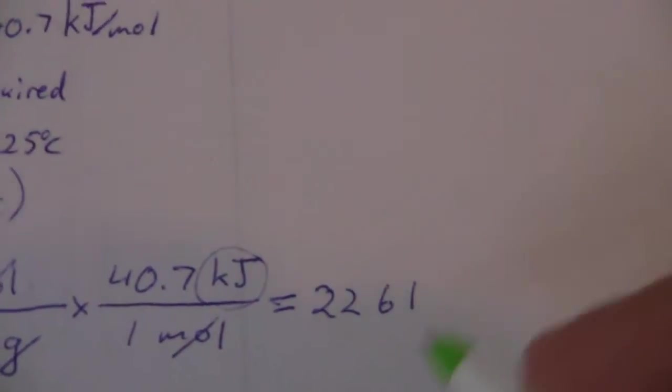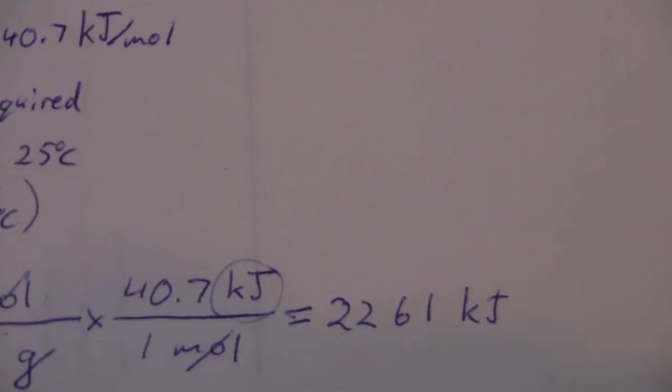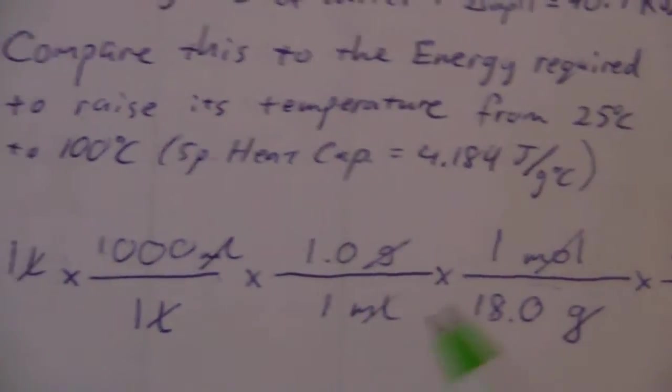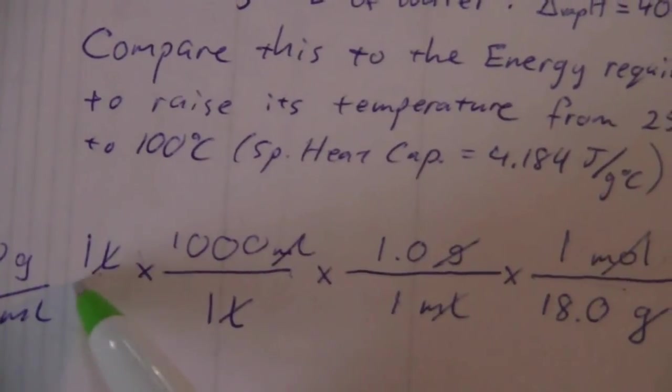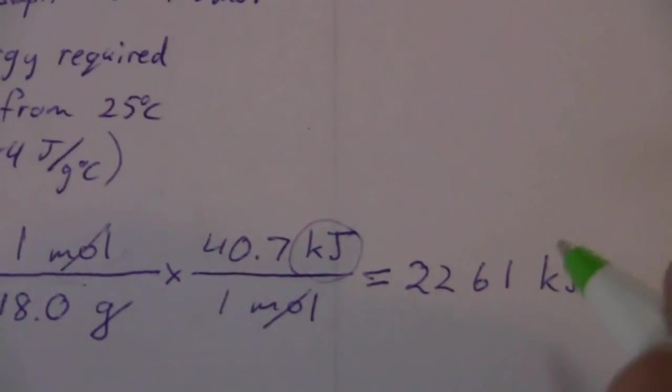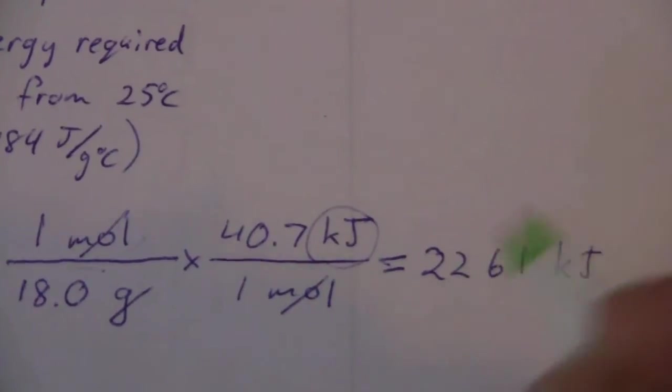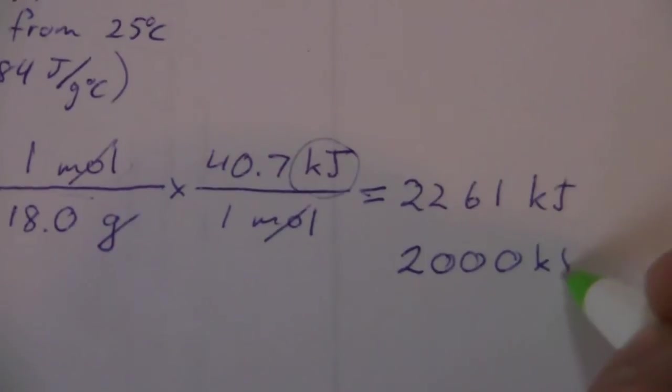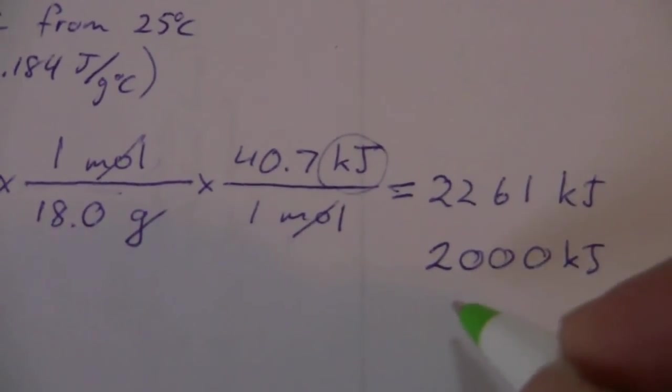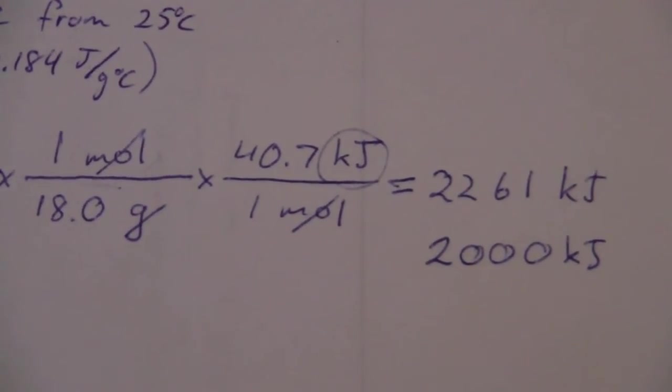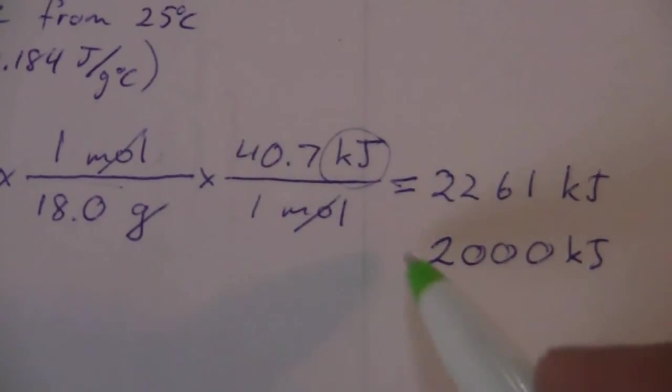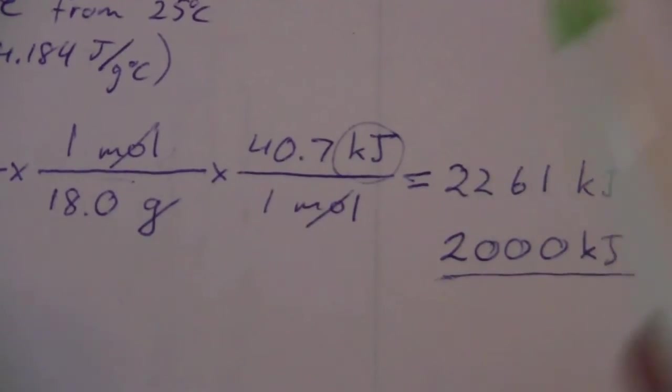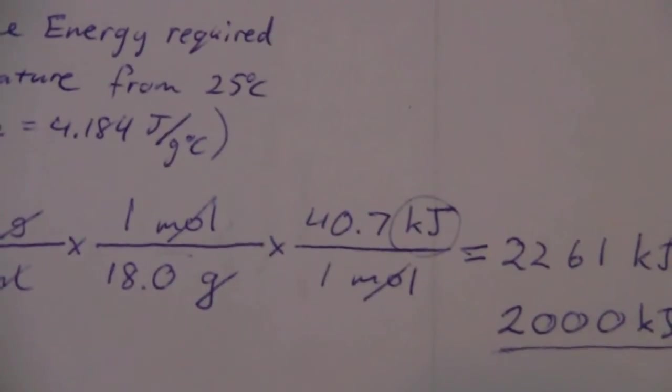Units are in kilojoules. Technically, I really should only have one significant figure. We're just kind of doing a rough estimate here. So we'll go ahead and round this. We're going to need about 2,000 kilojoules of energy or 2 megajoules, if you will. It's not a very common unit. But the point is this is a lot of energy that it takes to boil away the 1 liter of water.